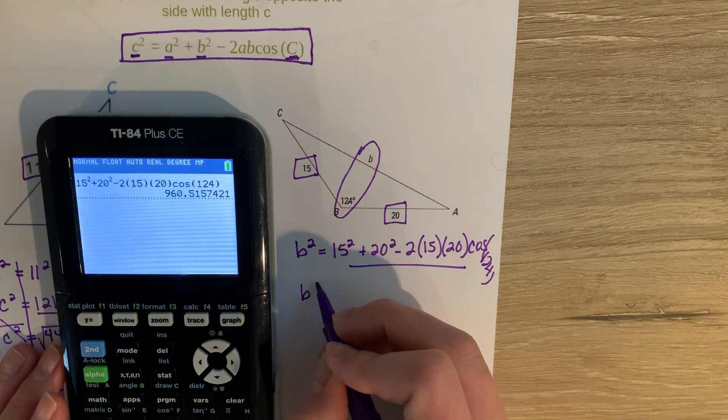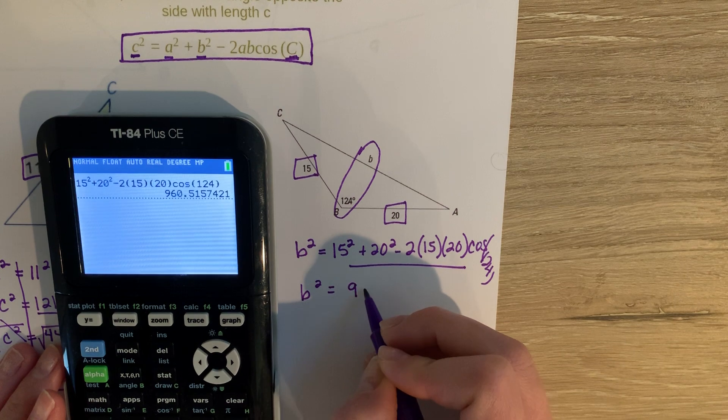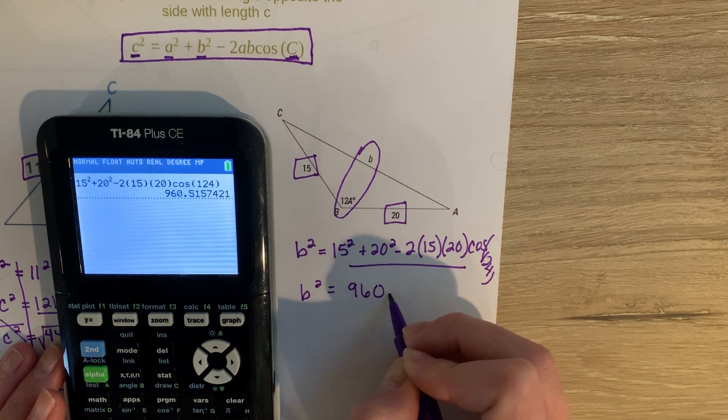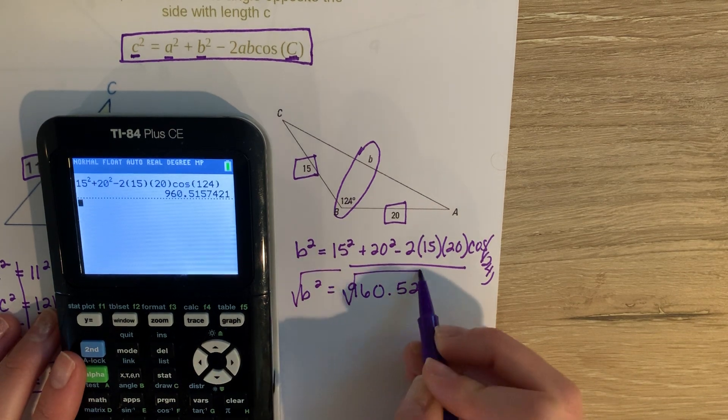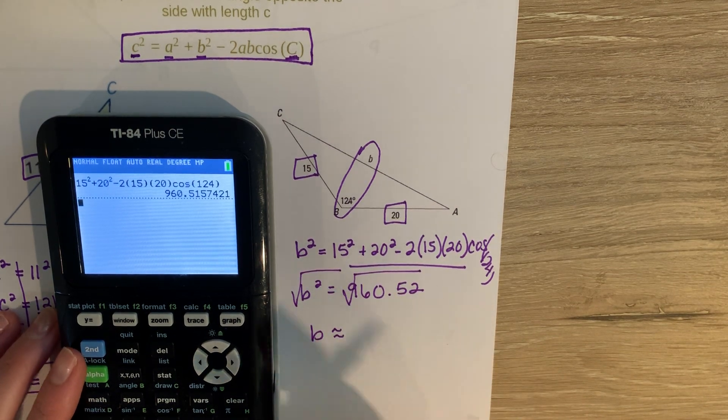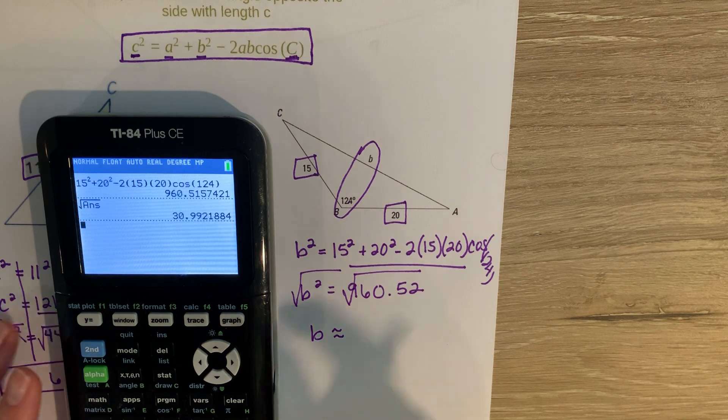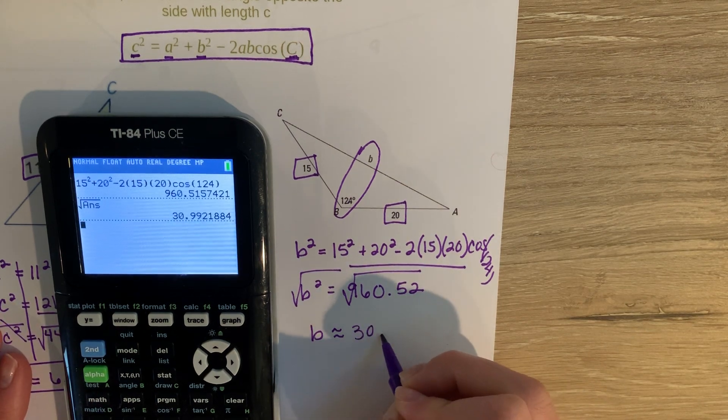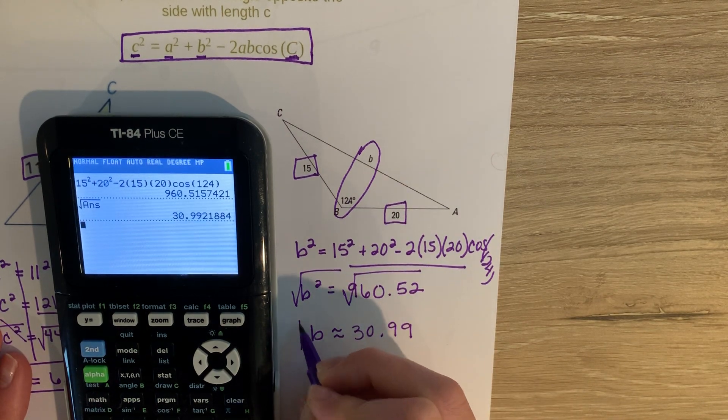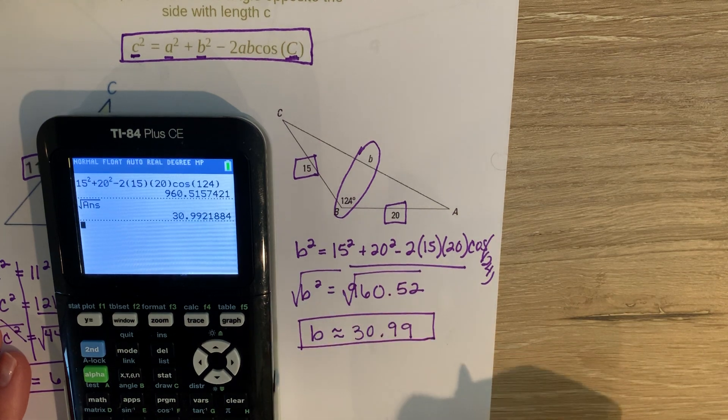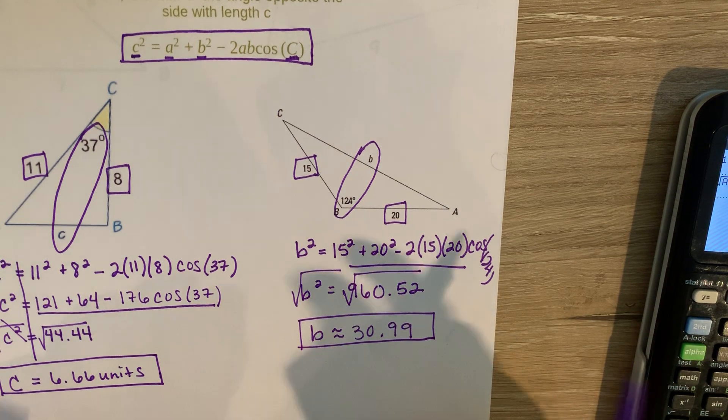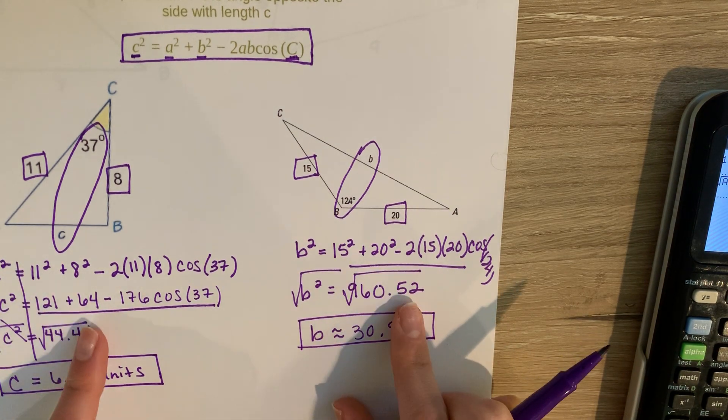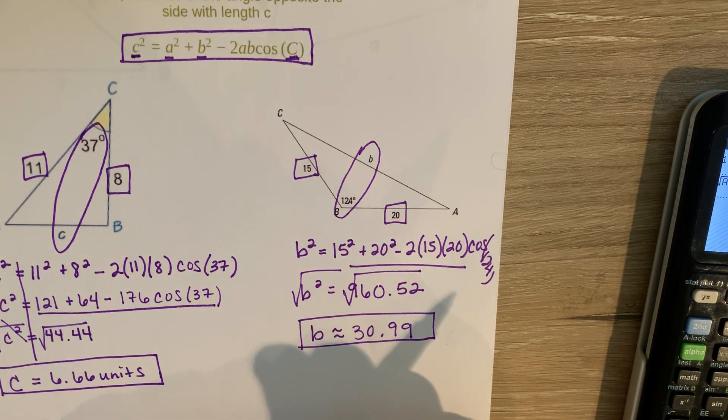And we get b squared is equal to about 960.52 approximately. And then we have to square root that. So we get b to be approximately 30.99. So finding a side is actually a little easier than finding an angle. So these were both examples of trying to find a side in a non-right triangle using law of cosines.